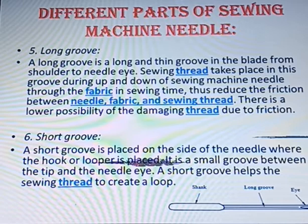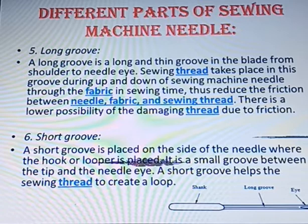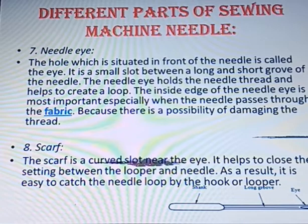Then we have the short groove. A short groove is placed on the side of the needle where the hook or the loop is placed. It is a small groove between the tip and the needle eye. A short groove helps the sewing thread to create a loop in the fabric.